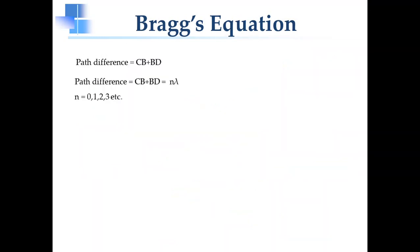So, for constructive interference, path difference is equal to n lambda, where n is equal to 0, 1, 2, 3, etc.